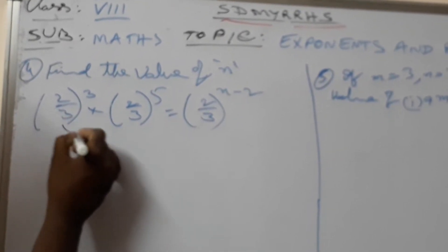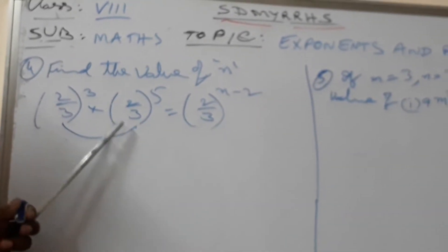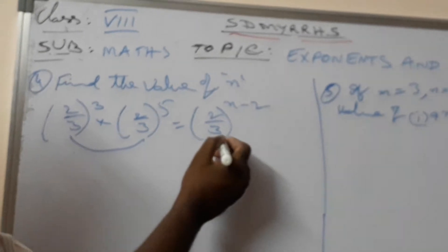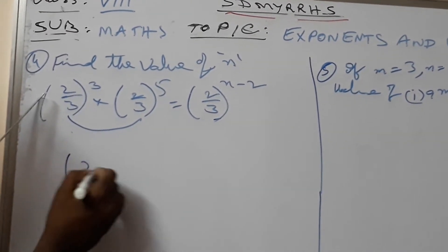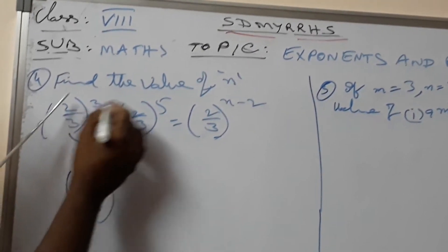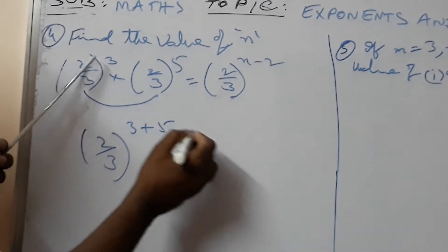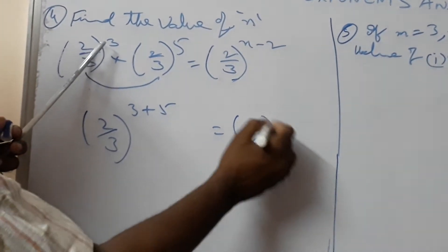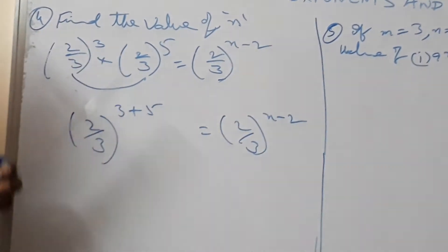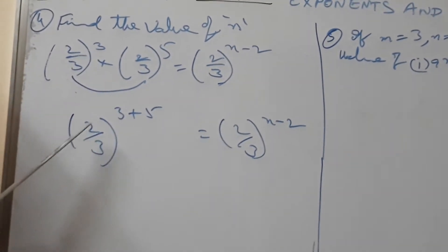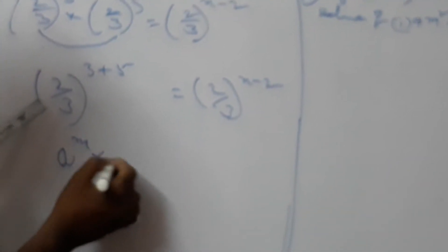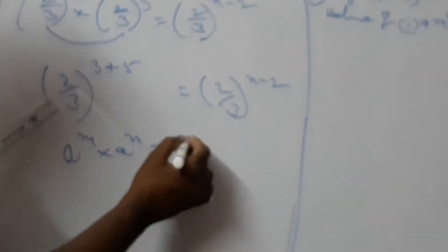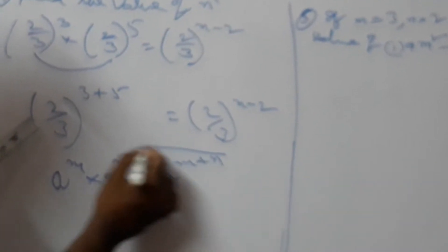What will you observe? The bases are all equal — (2/3), (2/3), (2/3). So (2/3) whole to the power of 3 plus 5, is equal to (2/3) whole to the power of n minus 2. The formula used is: a to the power of m, into a to the power of n, is equal to a to the power of m plus n.